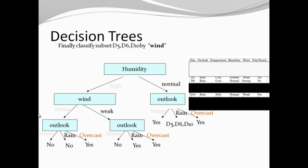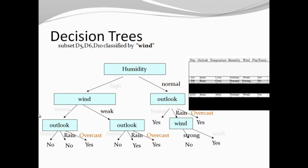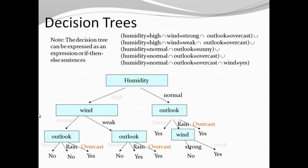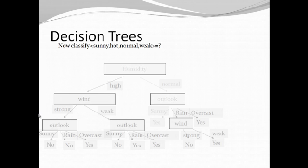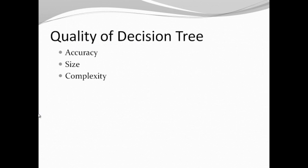Finally, classify the subset D5, D6, D10 by wind. Under wind, there are mainly two types: strong and weak, with leaf nodes as no and yes. Now the decision tree has been developed. The root node is humidity. Both parent nodes are wind and outlook. The sub-parents are outlook, outlook, and wind. The child nodes are no, no, and yes. This is the tree which is generated by the decision tree.